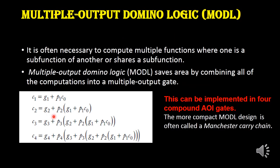Using a domino logic circuit we can produce multiple outputs. For example, consider C1 = G1 + P1·C0, and C2 = G2 + P2·(G1 + P1·C0). Here C1 is a sub-function used in computing C2, C3, and so on. In order to produce these four outputs in a single circuit, we use multiple output domino logic (MODL), implemented with compound AOI gates. MODL is also often called the Manchester carry chain.